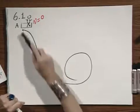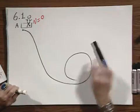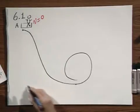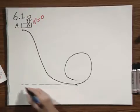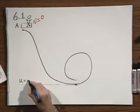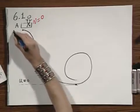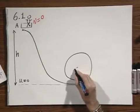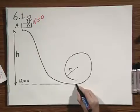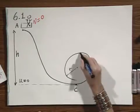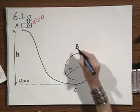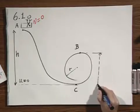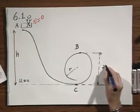You start with speed zero, and you go inside this loop, upside down. Let us call arbitrarily the gravitational potential energy at the ground level zero, so U equals zero. Let this height of A above the ground level be H. The radius of this circle, let that be R, and this is point C, and let this be point B, the highest point of the circle. The distance of point B above the ground would be 2R.